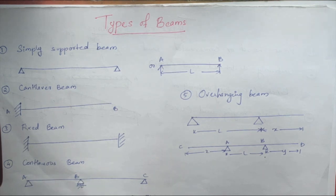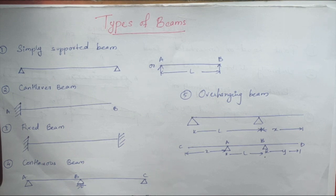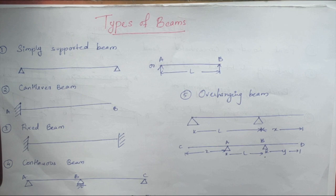Next we have continuous beams. Continuous beams means there are more than two supports — not just at the ends, it is supported by more than two supports. As you can see in the figure, there are three supports. These can be simply supports, roller supports, or any kind of support. You can normally see this in a godown where so many supports are given to the beam.